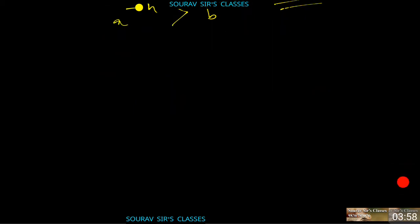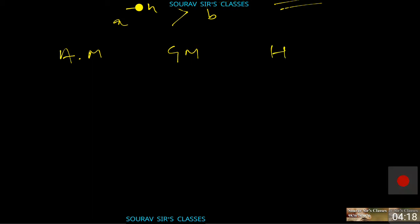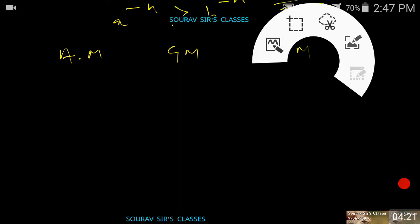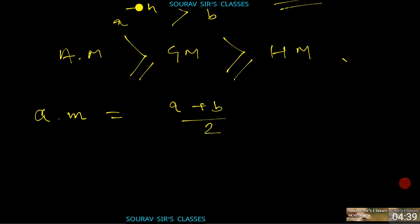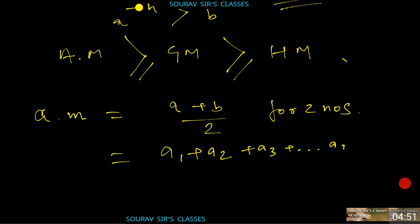Now, 90% of inequalities can be solved using the AM-GM-HM inequality. AM stands for arithmetic mean, GM for geometric mean, and HM for harmonic mean. They are related as AM ≥ GM ≥ HM, with equality when all numbers are equal. For two numbers, AM = (A + B)/2; for n numbers, AM = (A1 + A2 + ... + An)/n.